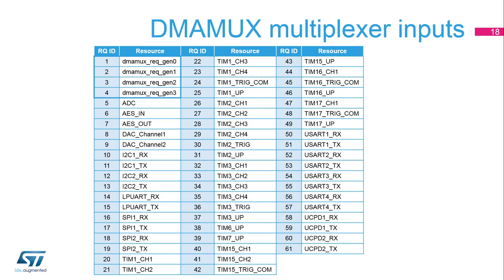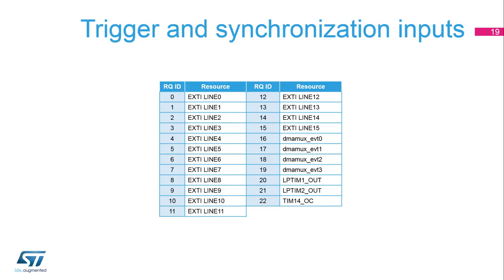This table shows the list of the request inputs of the DMA-MUX unit. Note that the actual number of request inputs is 57 plus 4, since the requests numbered from 1 to 4 are the outputs of the 4 request generator channels. The trigger inputs and synchronization inputs are the same and have the same ID in the DMA-MUX instantiated in the STM32-G0.